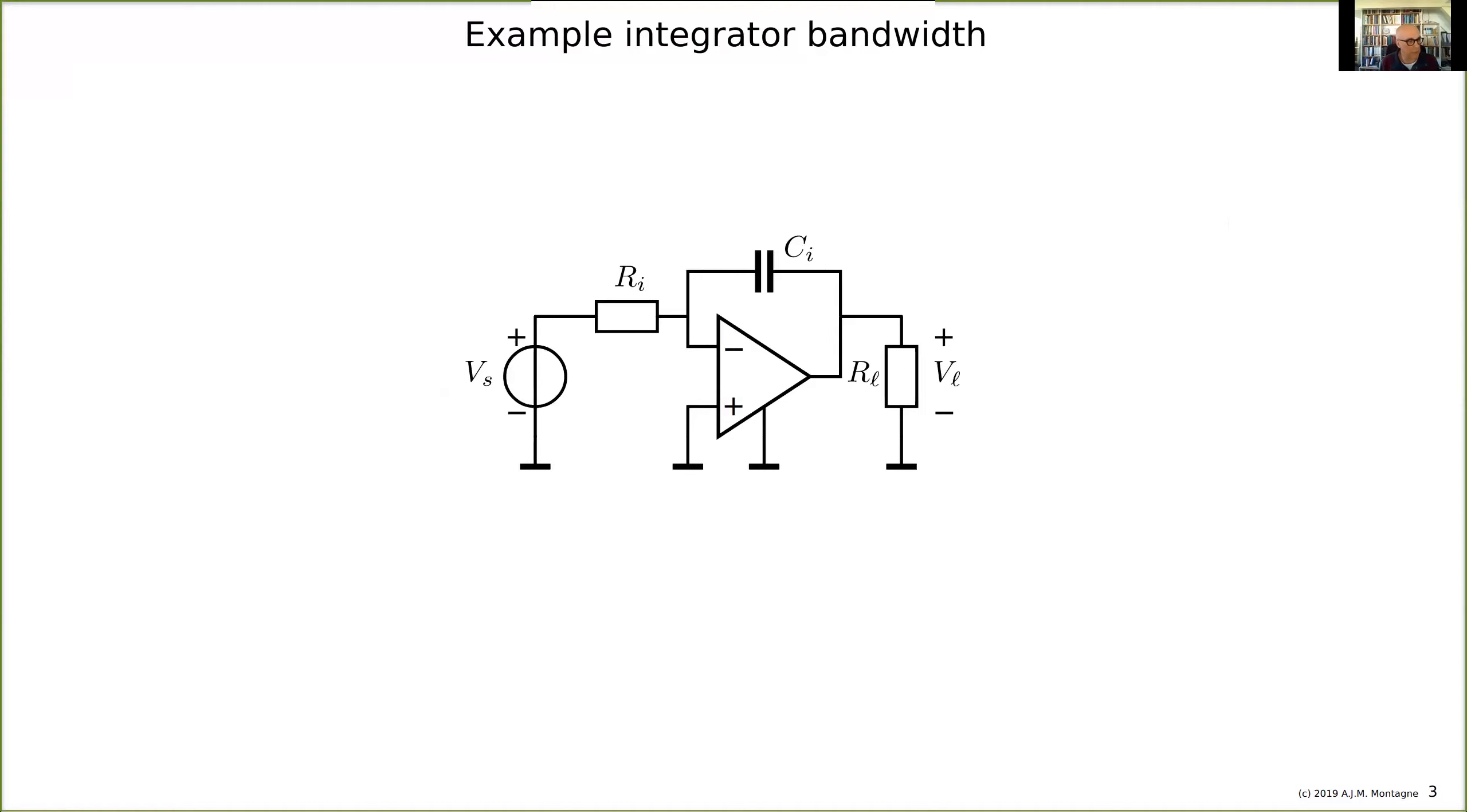This is a trans-impedance integrator. Here we have a voltage source with an internal impedance, and we are going to integrate this voltage with this integrator circuit. We can calculate the ideal gain by replacing the operational amplifier with a nullor and then investigate how the bandwidth definition is presented before.